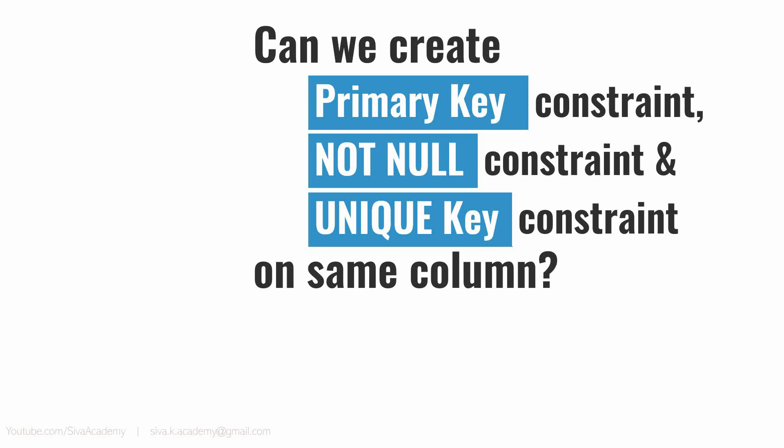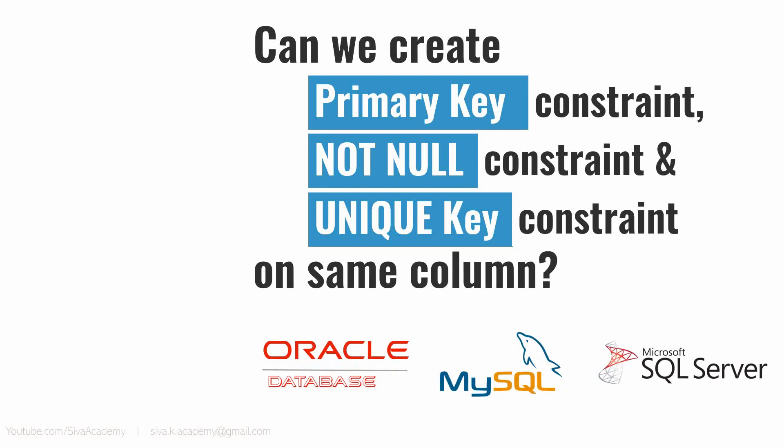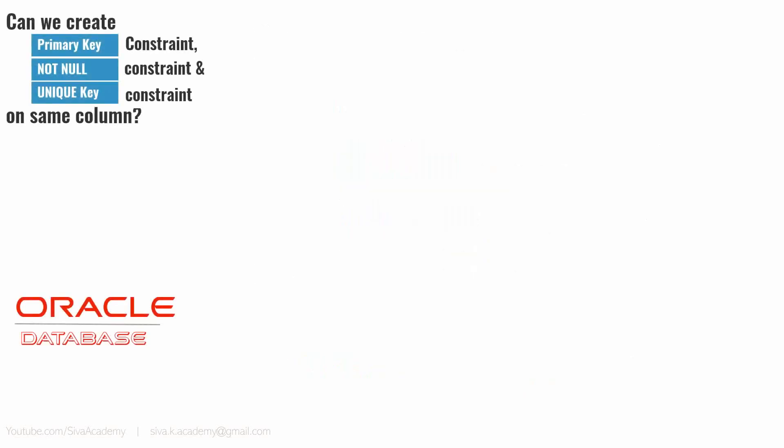By creating a primary key, it will not allow null values, and it will not allow any duplicate values to be inserted. However, these types of questions are generally asked just to confuse people or to check how well someone knows the technology. So let us see what will happen if we try to create a primary key, NOT NULL, and unique key constraint on the same column. Please watch till the end because the behavior is not the same across all databases. Let us start with Oracle database.